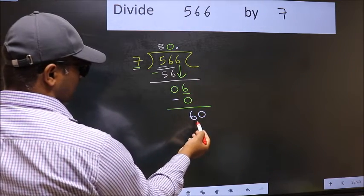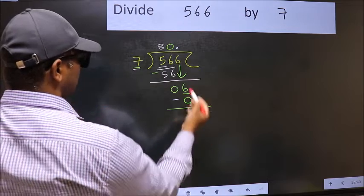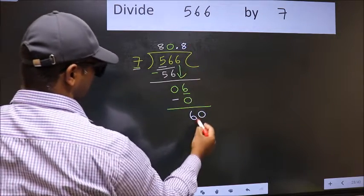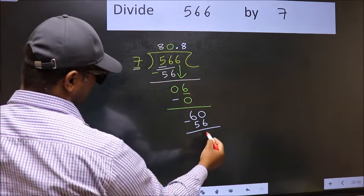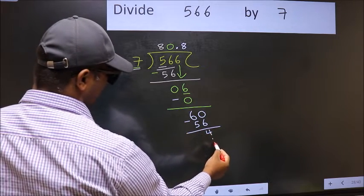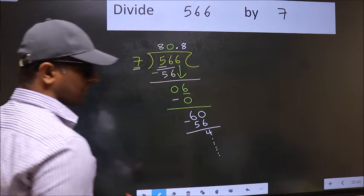So 60. A number close to 60 in 7 table is 7 times 8, 56. Now you should subtract. We get 4. And continue the division. I am not doing that.